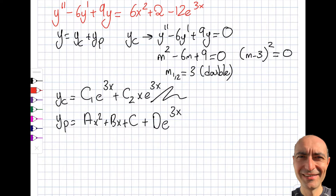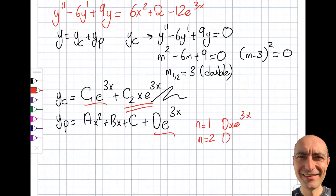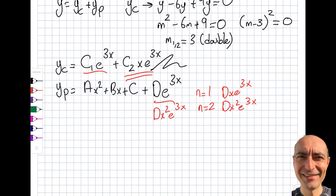No, I'm not. The reason is that the complementary solution and the particular solution share a common term — they're in the same form. So I have to multiply by x. But if I multiply by x with n=1, I get dx·e^(3x), which still overlaps. So I have to multiply again, giving me d·x²·e^(3x). Multiplying is fine in technique, but remember when taking derivatives you'll have the chain rule involved.